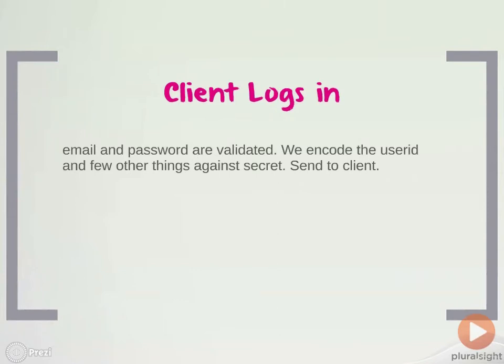Our backend will then validate the email and password, and then it will encode the user ID and a few other things against the secret in something called a payload. Then our JWT, which is comprised of the header, payload, and signature, will be sent to the client.